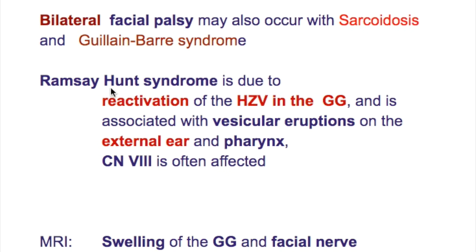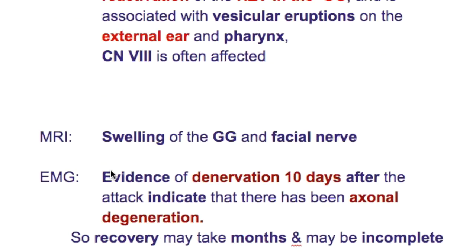What's Ramsay-Hunt syndrome? Ramsay-Hunt syndrome is due to the reactivation of herpes zoster virus in the geniculate ganglion and is associated with vesicular eruptions on the external ears and in the pharynx. It may involve cranial nerve 8, the vestibulo-cochlear nerve.